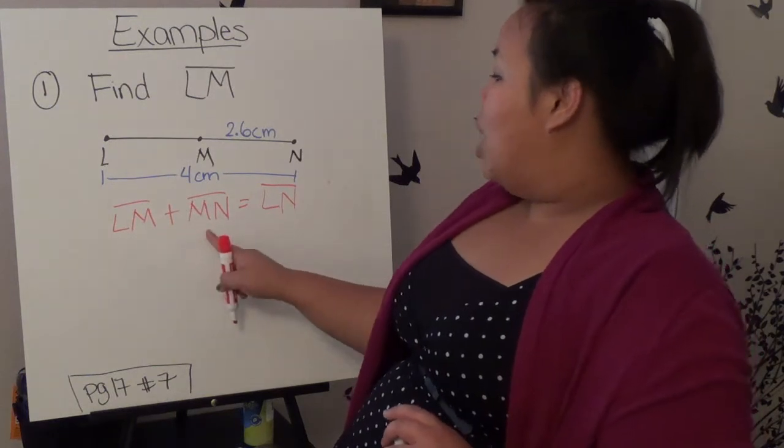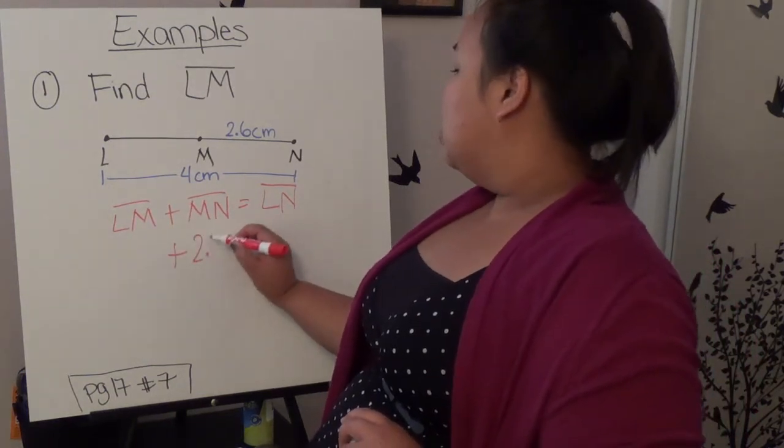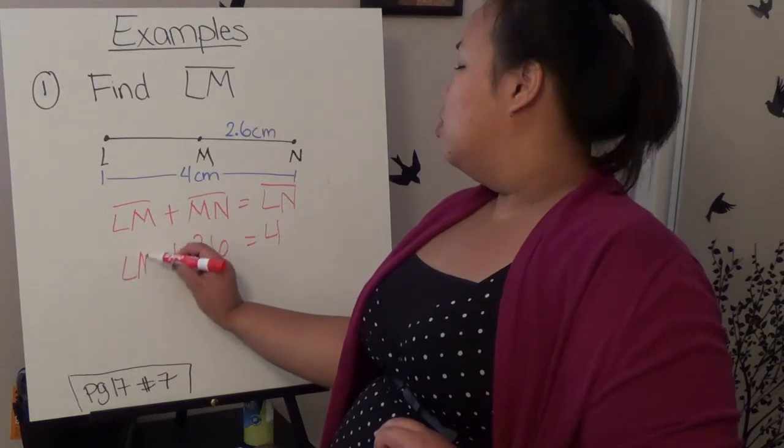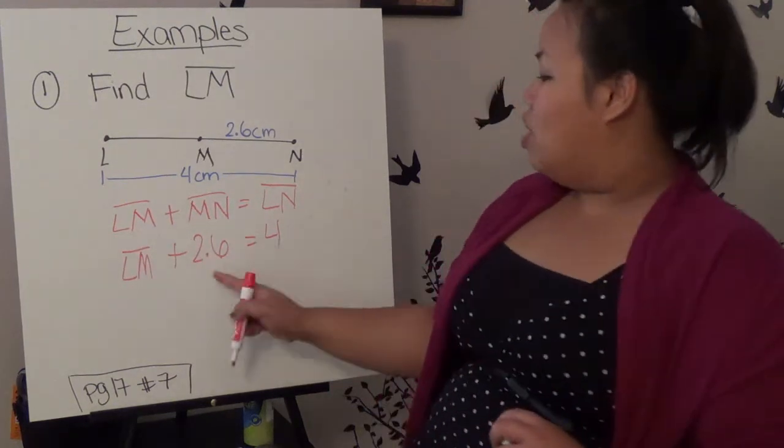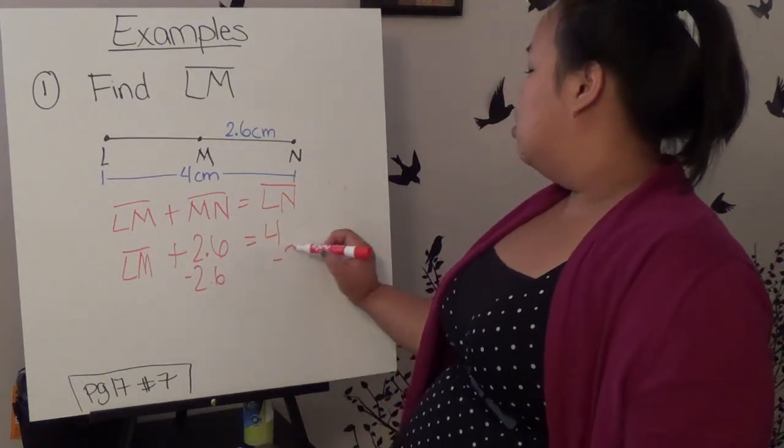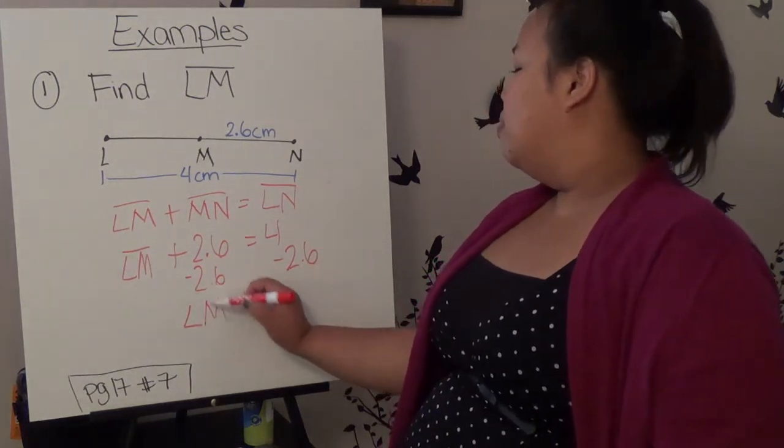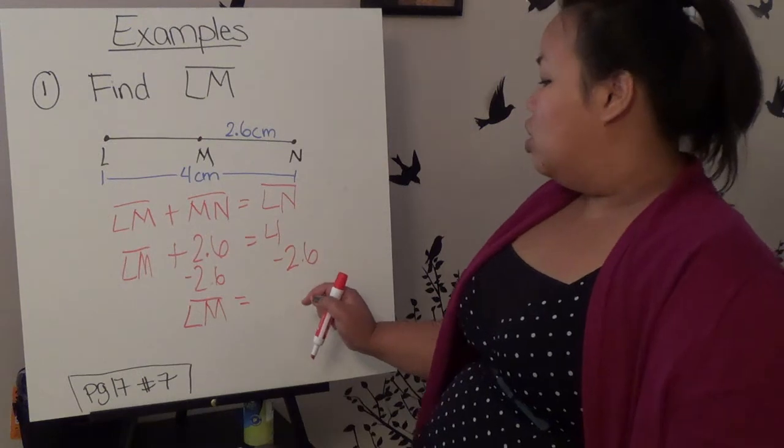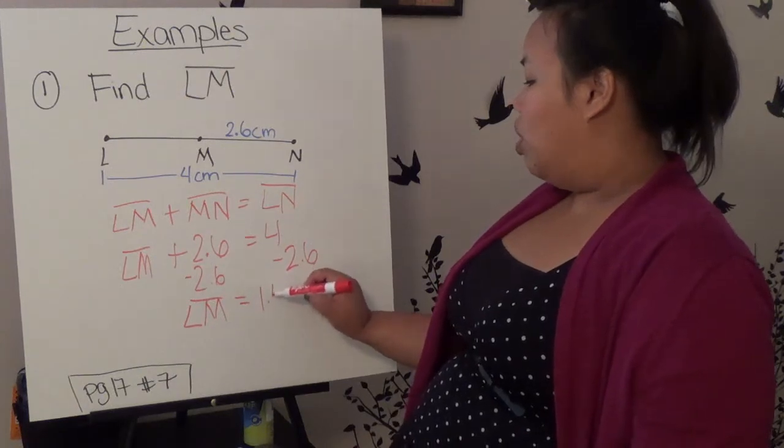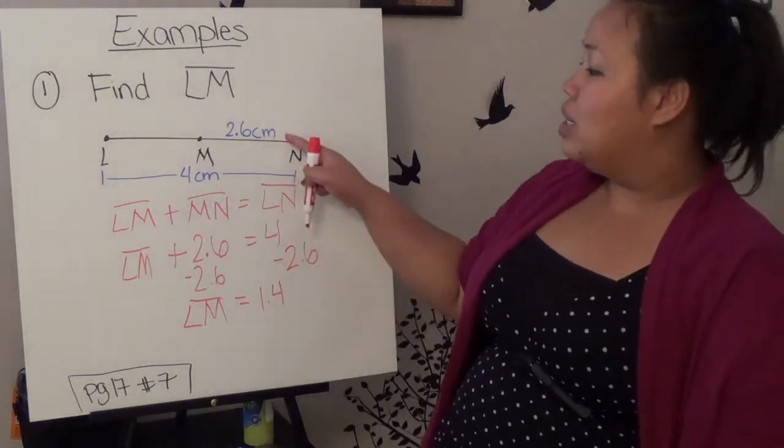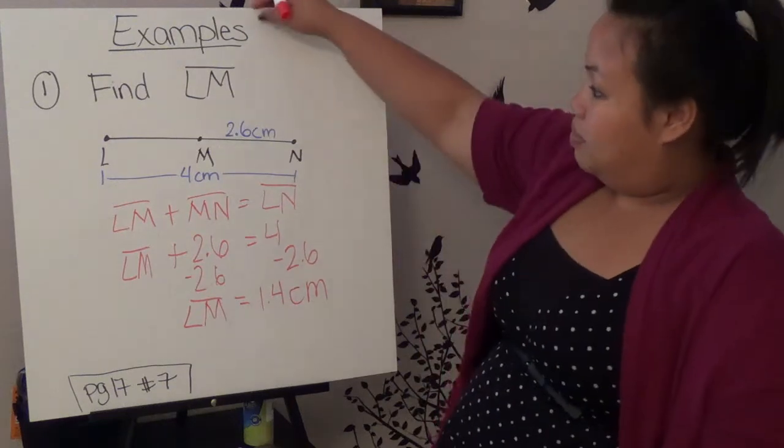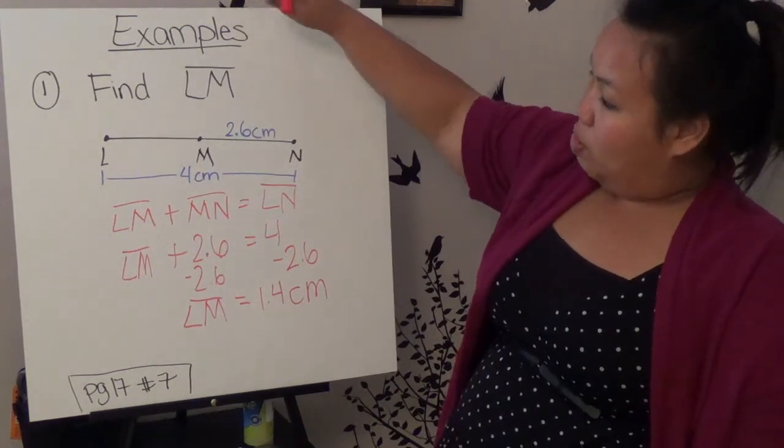We know what MN is, which is 2.6, and we know that LN, the whole thing, is 4. Now we don't know what LM is. And in algebra, if I wanted to get rid of it, I'd just subtract. So I subtract 2.6 from both sides. So LM equals 4 minus 2.6. And don't forget, because this is a story problem, that it's centimeters.